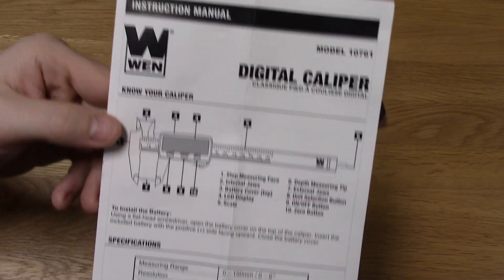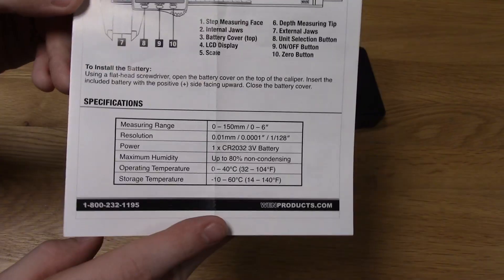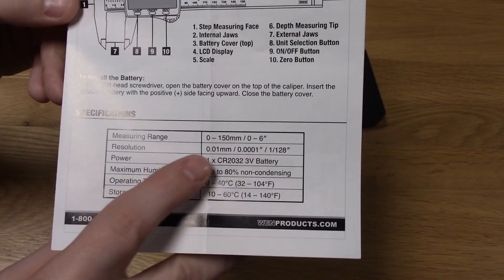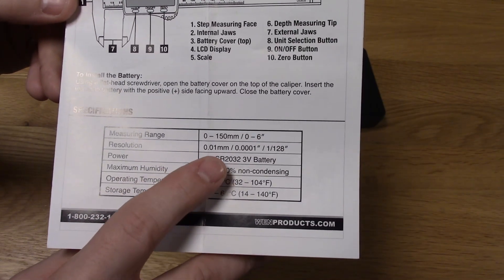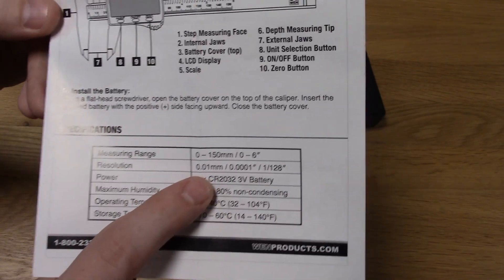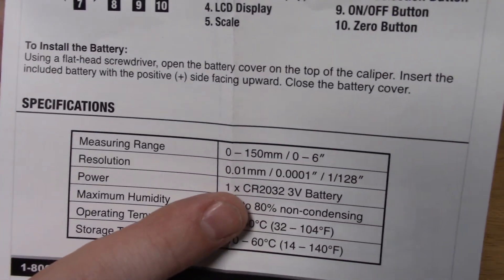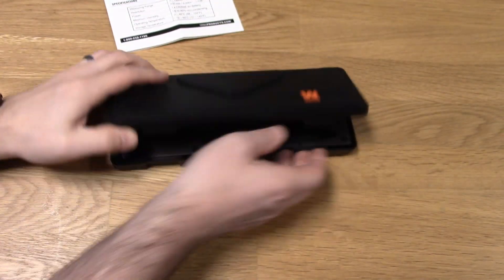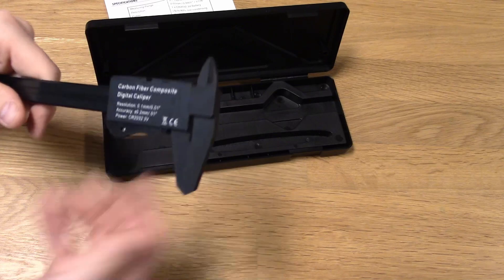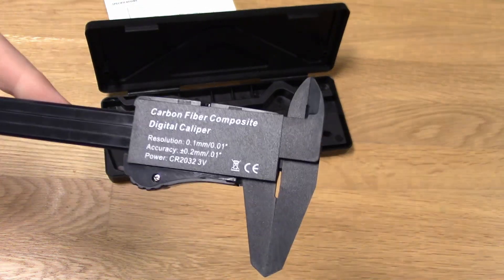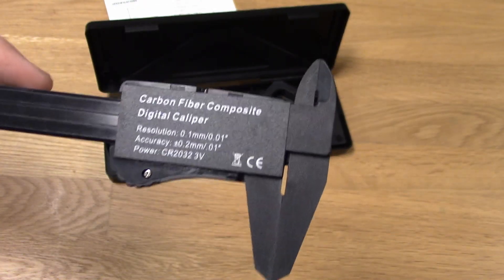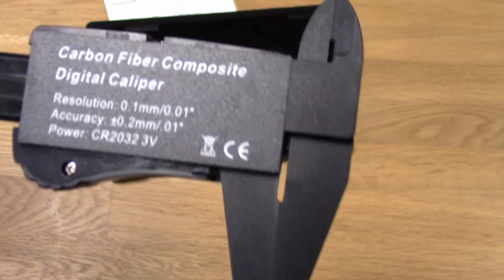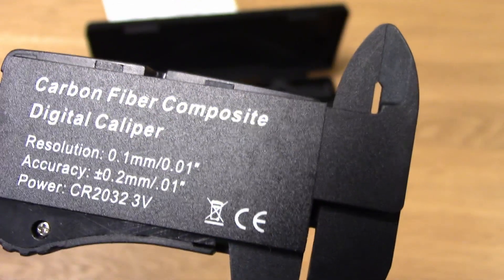Here is the manual it comes with. It's pretty good. So one thing, if you're looking at the manual, you'll see here it says that the resolution is 0.01 millimeters. But on the actual tool itself, if you flip this bad boy around, it says the resolution is 0.1 millimeters.